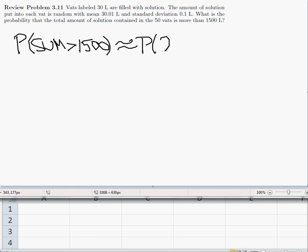So that's approximately the probability that a standard normal random variable is bigger than the observed sum, which is 1,500, minus the expected sum, which would be 30.01 times 50, divided by the standard error for the sum.